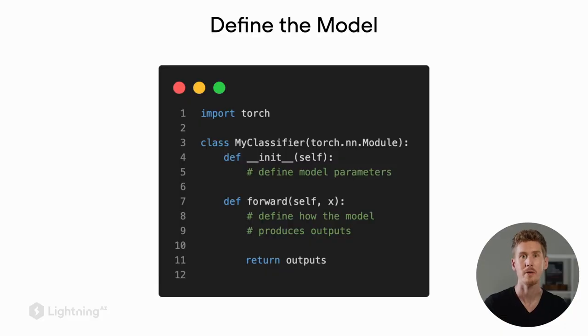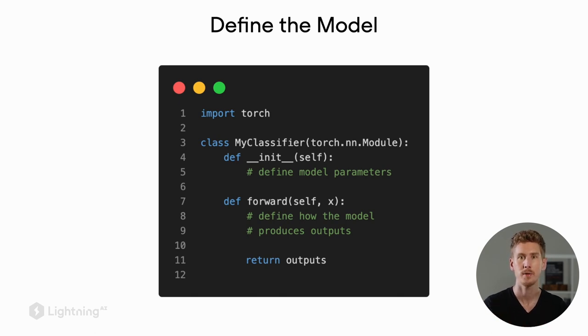We are getting really close to training the logistic regression model in PyTorch. There are just a few more things to mention about the PyTorch API, which will also be very relevant when we train our deep neural networks later on. Here's the general structure of how we define a model in PyTorch, and this applies to any type of model, whether it's logistic regression or any of the deep neural networks we will cover later.